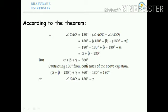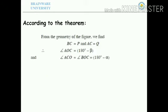Therefore, angle CAO equals 180 minus gamma. We can now find all three angles of triangle AOC: 180 minus alpha, 180 minus beta, and 180 minus gamma. With these three angle values, we can understand how to write the proof systematically.